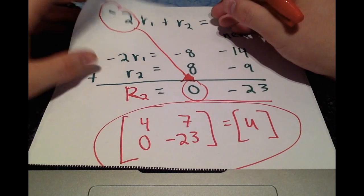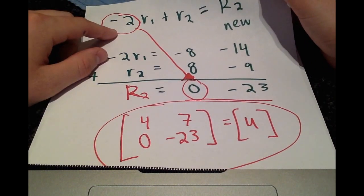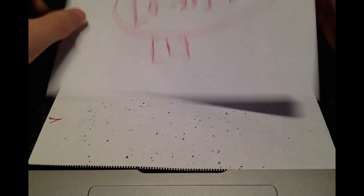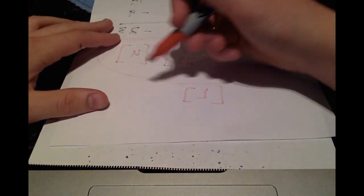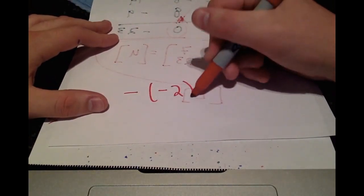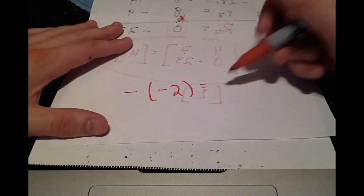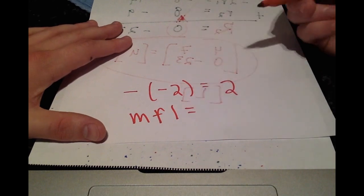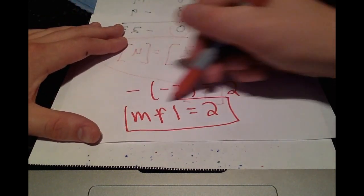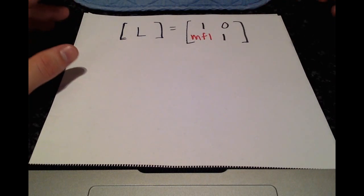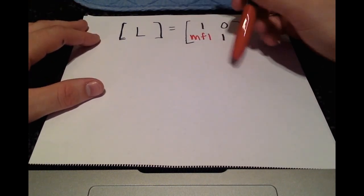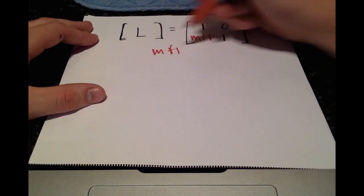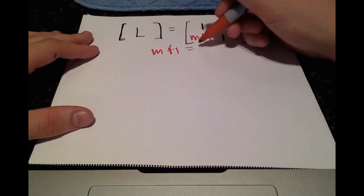So what the multiplication factor is, it's going to be the negative of whatever we're multiplying row 1 by. So the negative of negative 2 is just 2. So multiplication factor 1, we only have one multiplication factor, it's 2. This is how it's going to look every time. We're going to have 1s along the diagonal, 0s above it, and the multiplication factor is below. Mf1, we found to be 2.